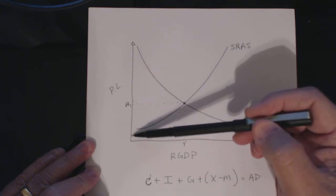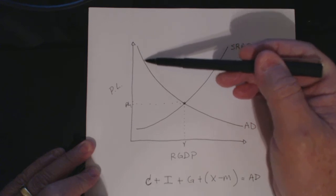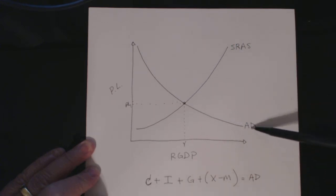This curve represents the aggregate demand curve—that is, the total of what we call consumption plus capital investment plus government spending plus what we call net exports, X minus M. Therefore we get the formula C + I + G + (X - M) = AD.